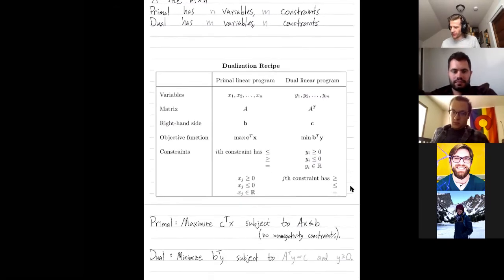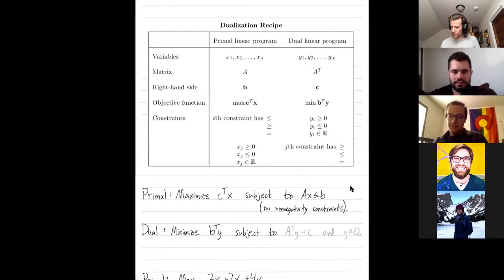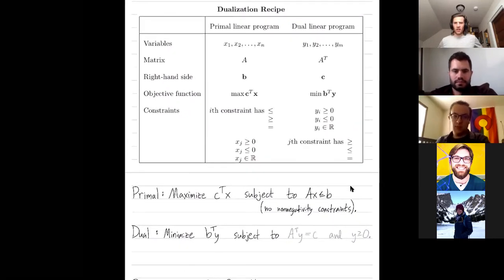So pretend I give you a different primal problem. My original problem is maximize c transpose x, subject to ax is at most b. That all looks familiar, but I don't have the non-negativity constraints. So this has been completely removed.